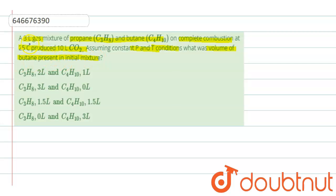What is being asked in the question: when 3 liter gaseous mixture of propane and butane was subjected to combustion reaction, it produced 10 liters of carbon dioxide gas. If we assume pressure and temperature to be constant, then we have to find what was the initial amount of butane present in the mixture.